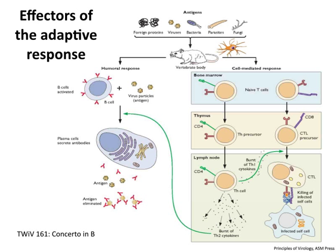Now we have a feeling for how antigens are presented to T cells. Let's talk about the effectors that result from antigen presentation—the effectors of the adaptive response. On the right are the two types of T cells made, and on the left are the B cells that make antibodies. Taking T cells first: with our antigens in the lymph node presented to T cells, on the left is the CD4 pathway. We're starting from the bone marrow and thymus, but here is the lymph node where a T helper cell—CD4-positive lymphocyte—has encountered a dendritic cell presenting a viral peptide that it matches with.